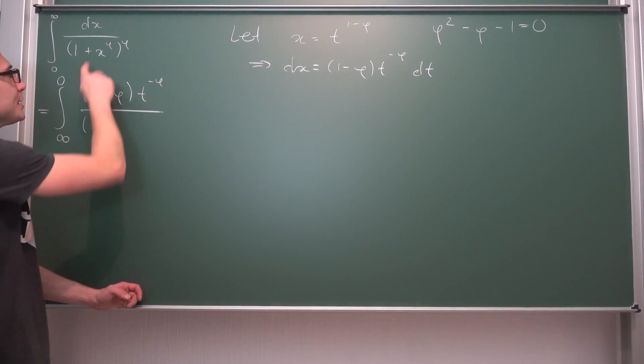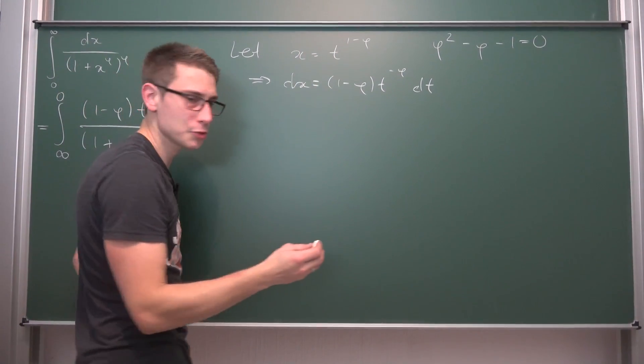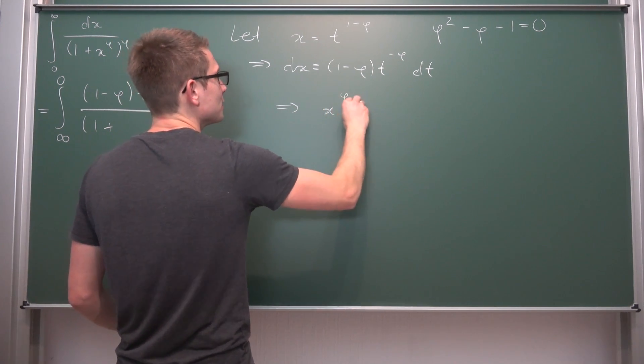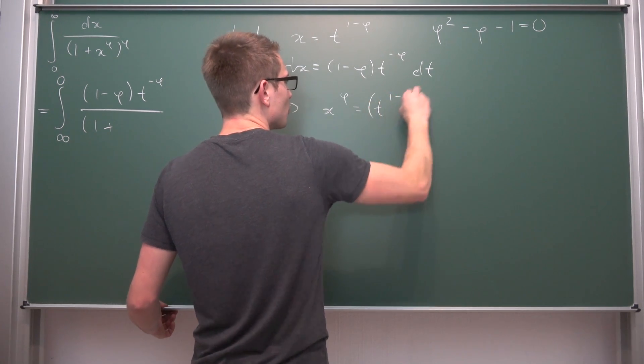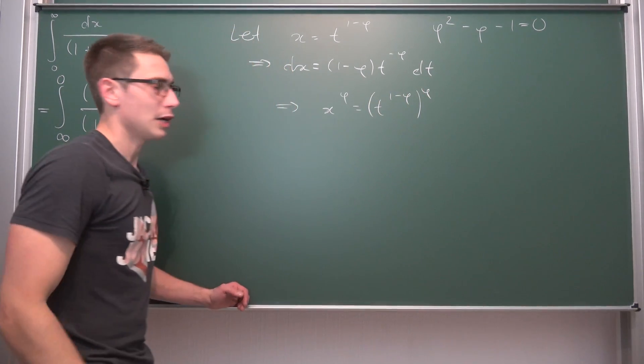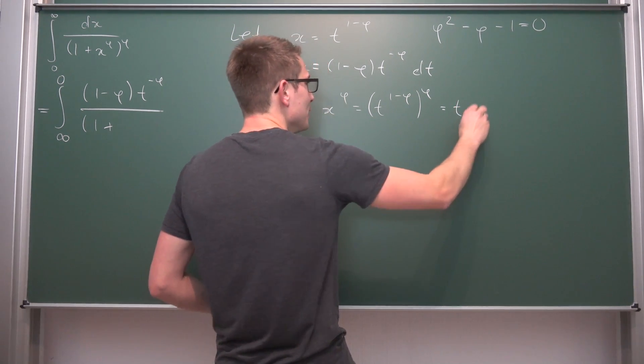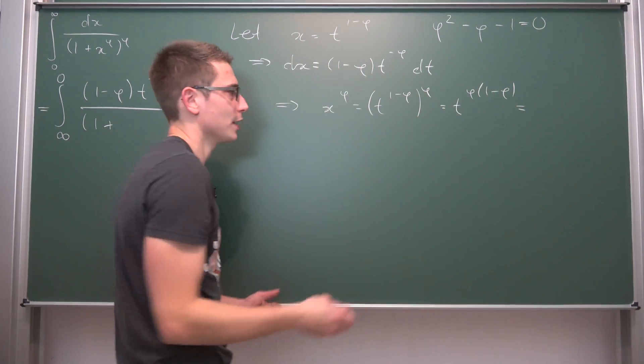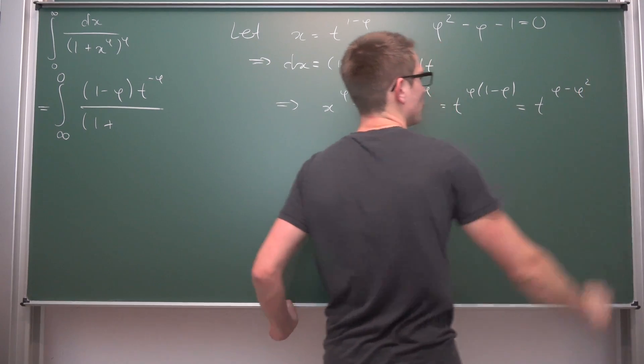Our dx is equal to 1 minus phi times t to the negative phi power divided by 1 plus x to the phi. So we need to find out what x to the phi is. Let us raise both sides of our substitution by phi. This is going to give us x to the phi is equal to t to the 1 minus phi and all of this to the phi power. By making use of a simple exponent rule, we are going to get that this is t to the phi times 1 minus phi, or in other words, if we distribute the phi out, we get t to the phi minus phi squared.